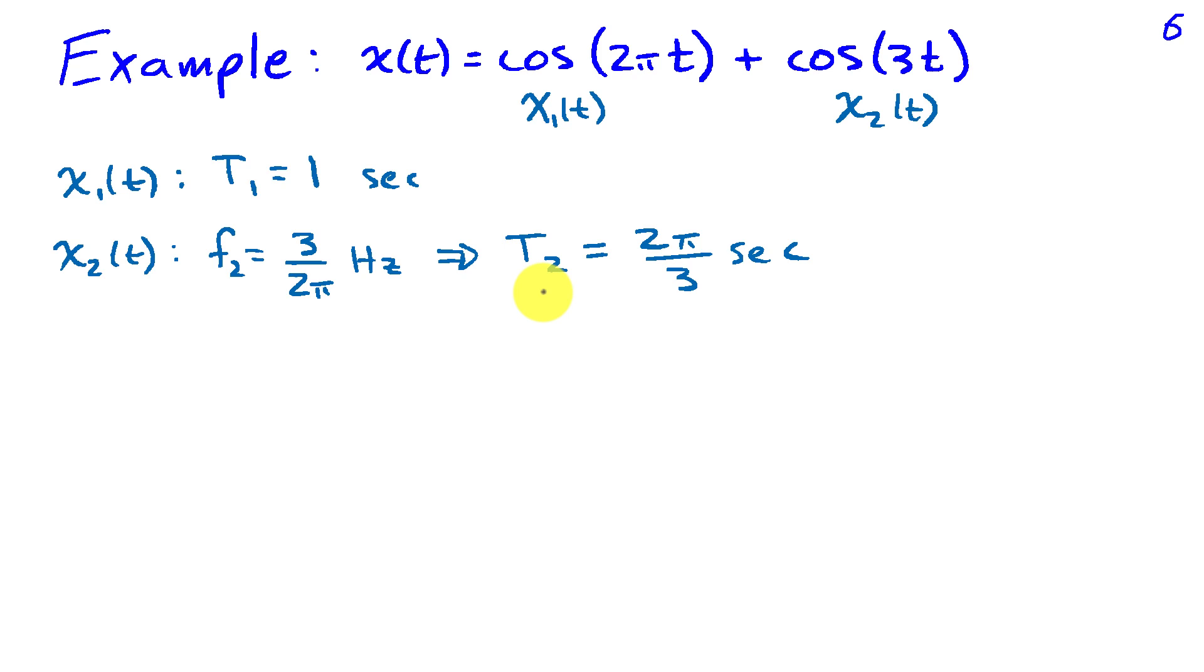Therefore the fundamental period for x2 is 2 pi over 3 seconds. So in order for the sum to be periodic, we have to find integer multiples of t1 and t2 that are equal.